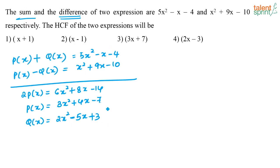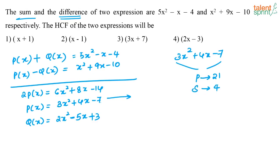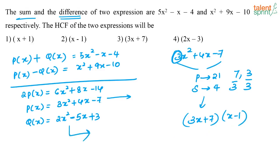Now that we have both expressions, we need to find their HCF by writing each in terms of factors. For P(x) = 3x squared plus 4x minus 7, I need two numbers whose product is 21 and whose sum is 4. Those numbers are 7 and 3. With the coefficient of x squared being 3, using the sign table, the factors of P(x) are (3x plus 7)(x minus 1).